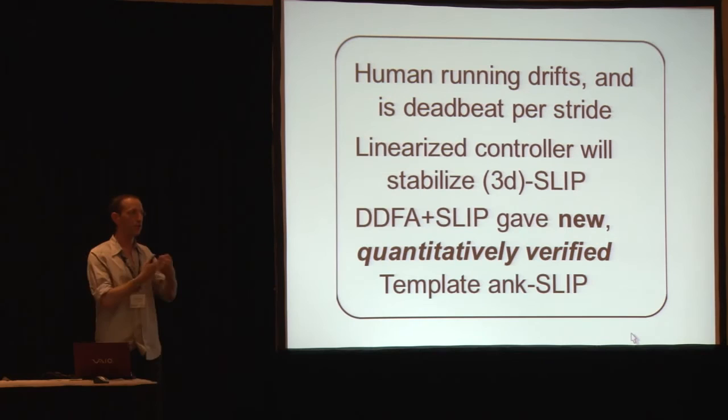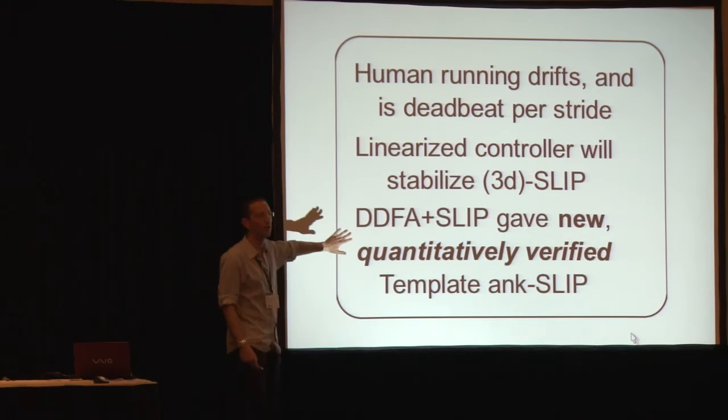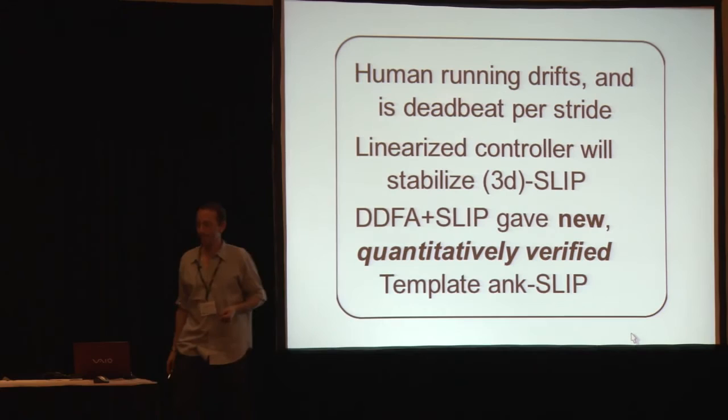So the last part of this talk is basically saying data-driven Floquet analysis combined with SLIP gave us a new and quantitatively verified template. It's an ankle SLIP. That is, it uses data from the ankle position to control the SLIP model. And with that, we can recover pretty much everything that we could do in terms of prediction with a full-blown Floquet model which doesn't have much analytic structure. And with that, we're done. Thank you.